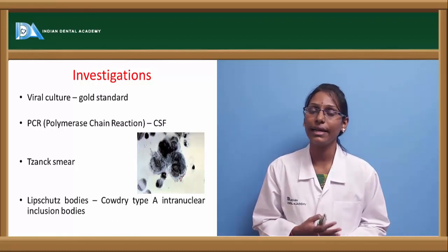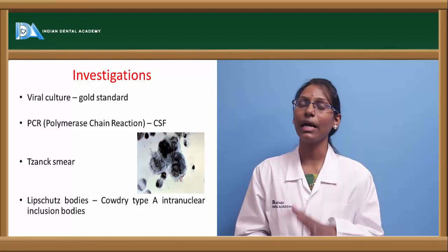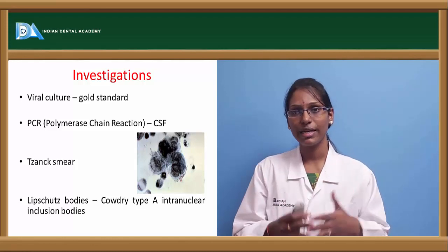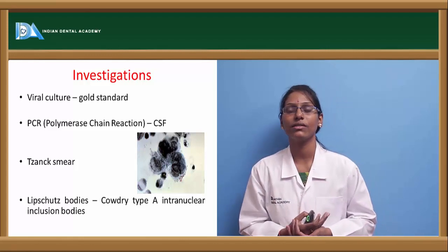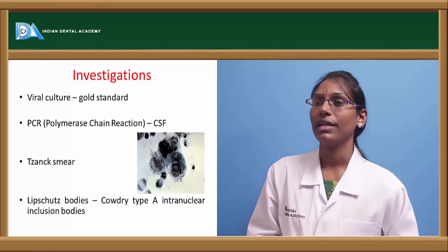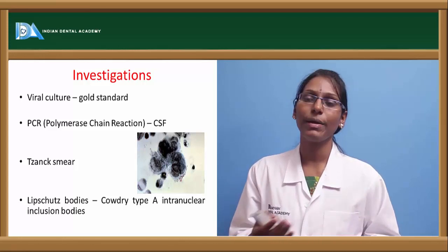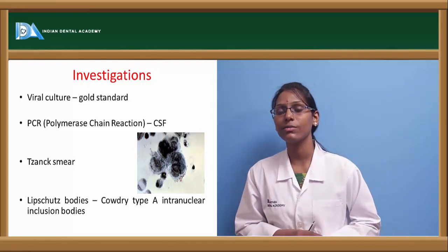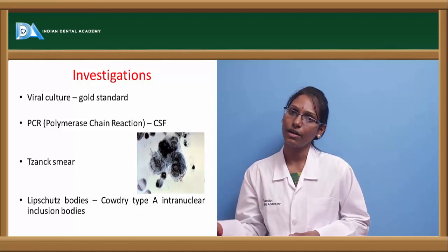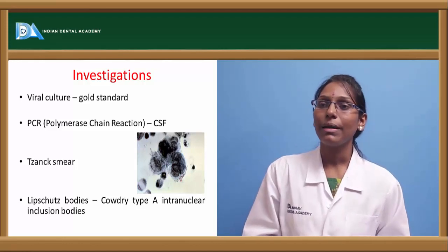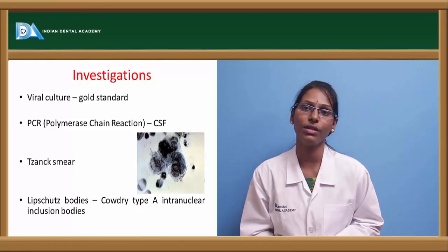Various investigations that help identify HSV infection: primarily a thorough history of the patient and the clinical features will give a provisional diagnosis. Other investigations to reach a final diagnosis include viral culture, which is the gold standard, and PCR of the CSF. Tzanck smear is a histopathological test — performed by collecting fluid from the vesicle and staining it to see Tzanck cells. Another pathognomonic histopathological feature is Lipschutz bodies, where Cowdry type A intranuclear inclusion bodies can be seen.